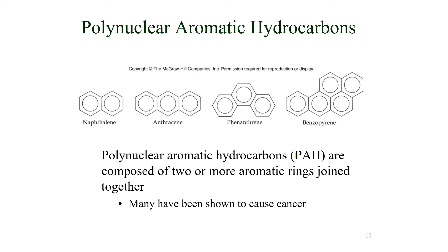PAH stands for polynuclear aromatic hydrocarbons — compounds with two or more aromatic rings joined together. Naphthalene has two six-carbon rings; anthracene has three rings; phenanthrene also has three rings but with different positioning; and benzopyrene has five rings joined together. Most of these molecules have been shown to cause cancer. You must know the names and how many rings are present in each.